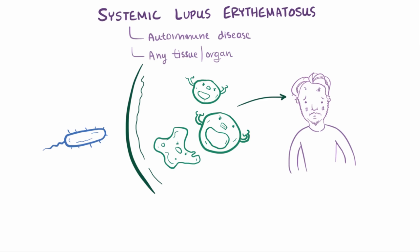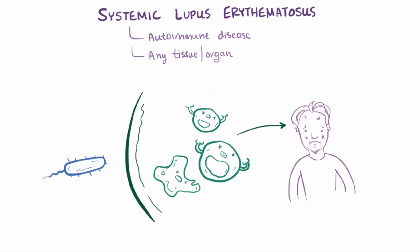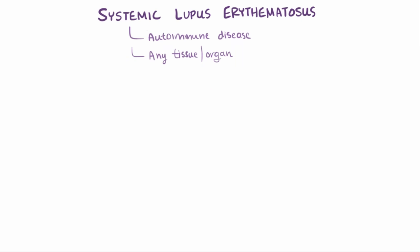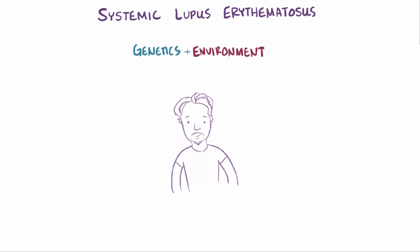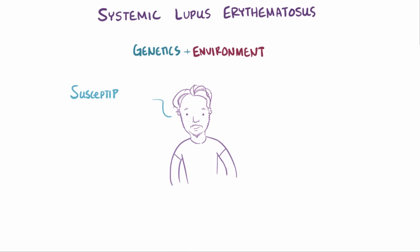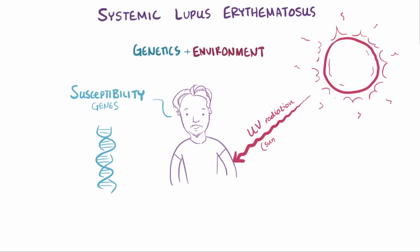Like a ton of other autoimmune diseases, it's not completely clear why lupus develops. Like most diseases, it's the result of both genetics and the environment. For example, a person with susceptibility genes who is exposed to UV radiation in sunlight — a known environmental risk factor — may develop lupus.